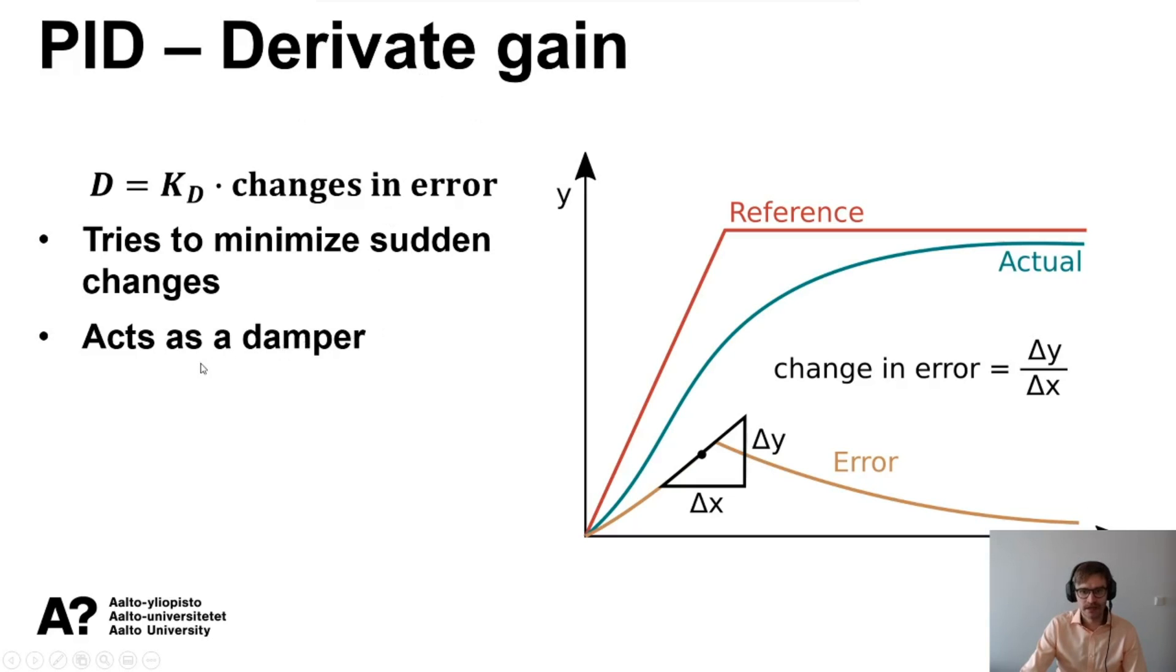This is the hardest to sort of wrap your head around. So don't feel stressed if you don't understand it completely straight away. But what you need to know is that the derivative term acts as a damper. It tries to get rid of small oscillations since it tries to avoid sudden changes in your system. So that is the definition of a damper.